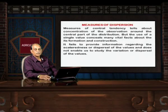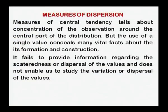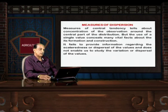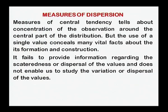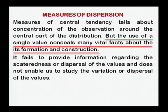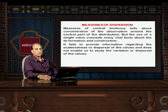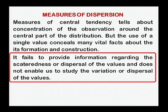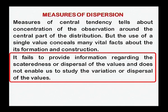Now, dear friends, we start the discussion of measures of dispersion. Measures of central tendency tell about the concentration of observations around the central part of the distribution. Central tendency is useful only when we have to find out the concentration of variables, giving general information regarding the variables. But the use of a single value conceals many vital facts about its formation and construction. Central tendency simply says how values are concentrated, but it does not tell about the variations, dispersions, or scatteredness of the values given in the table. It fails to provide information regarding the scatteredness or dispersal of values and does not enable us to study the variations.